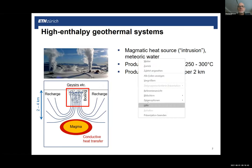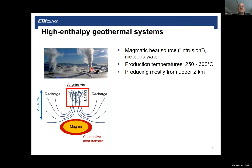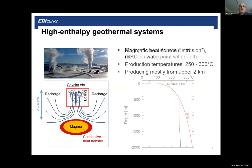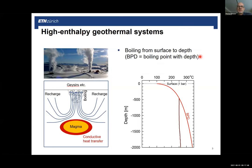Looking below the surface installations, the conceptual view is that somewhere a few kilometers below there is a body of magma — an intrusion — that is very hot and heats whatever groundwater sits in the pores and fractures of the earth's crust. By doing so it induces thermally driven convection. The fluid picks up heat around the magma and in these systems can pick up so much heat that it actually starts to boil in the subsurface. Production for power generation typically occurs from the uppermost two kilometers, at temperatures around 250 to 300 degrees Celsius.